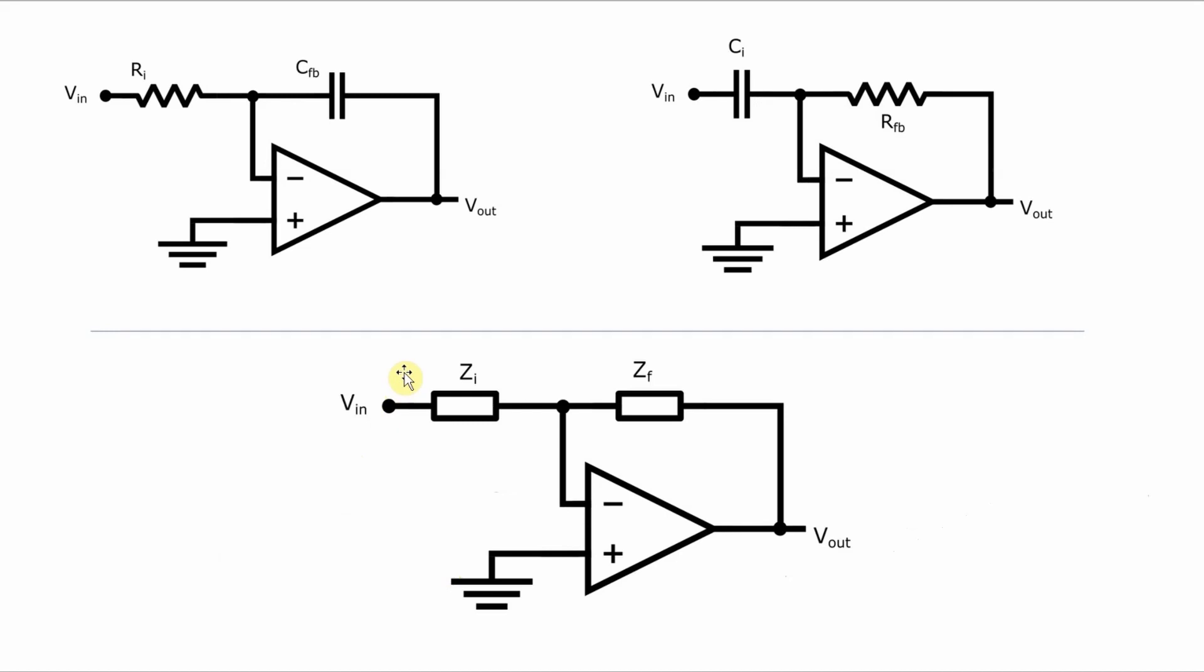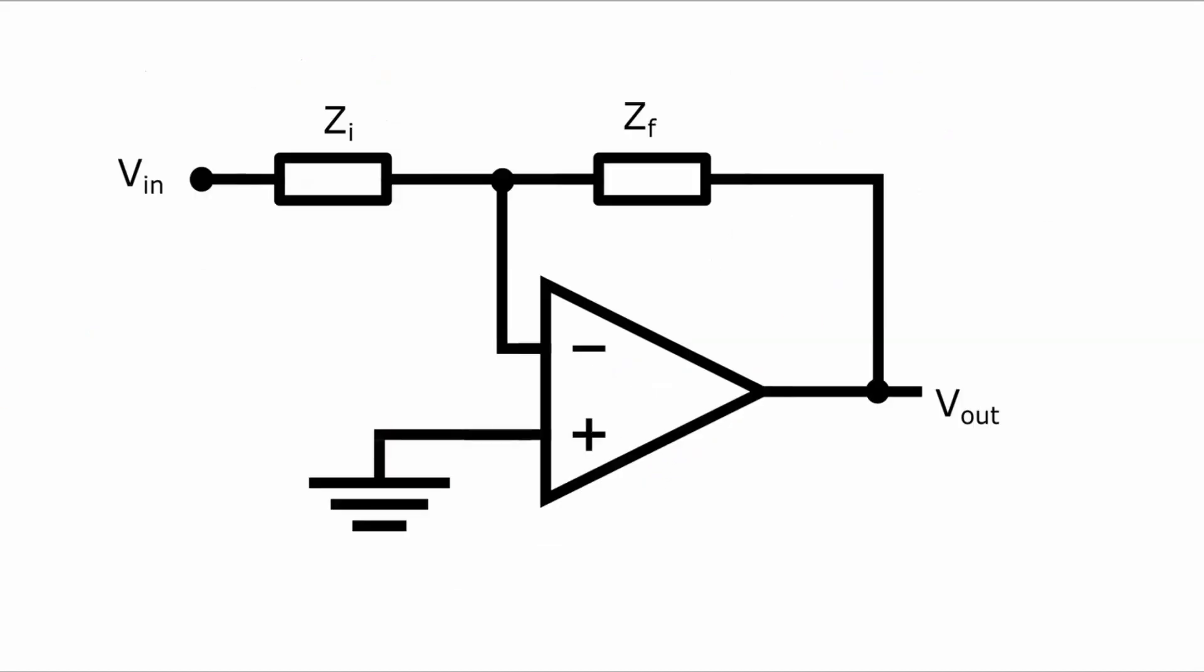The idea that I'm going to use is that you can replace the resistors and capacitors in the circuits with generic impedances. So the input resistor on the integrator and the input capacitor on the differentiator become a generic input impedance, and the feedback capacitor on the integrator and the feedback resistor on the differentiator become a generic feedback impedance to give a generic circuit that looks like this.